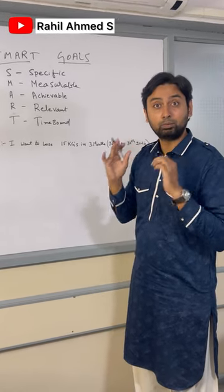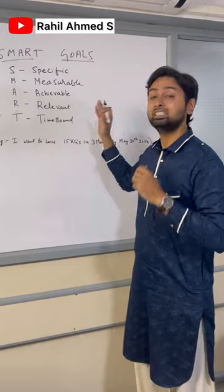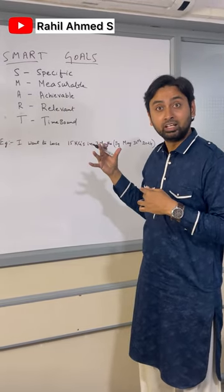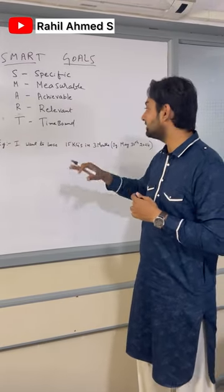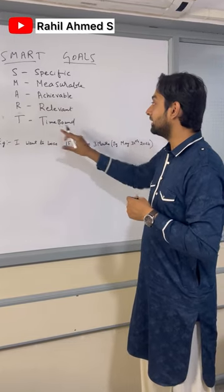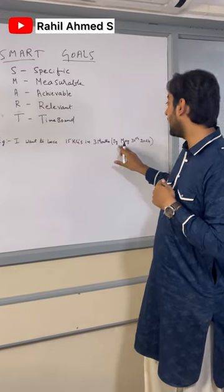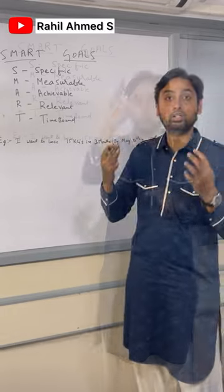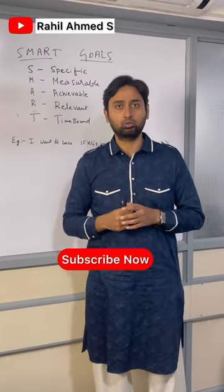The next is R — Relevant. Is it relevant? Yes, as I want to be healthy in my life, so this is a relevant goal for me. The next is T — Time-bound. The time frame here is three months, by May 30th. Now you understand the SMART goals concept. Thank you.